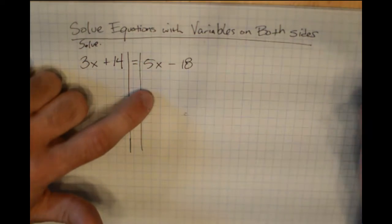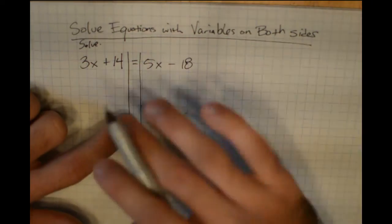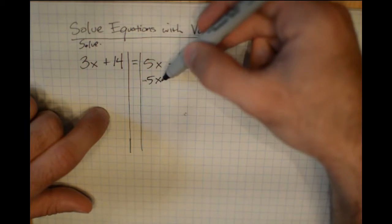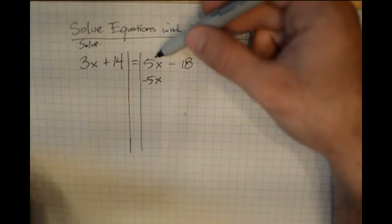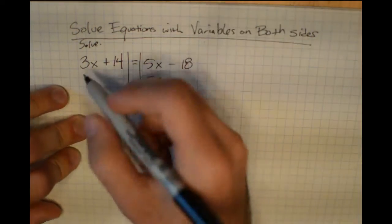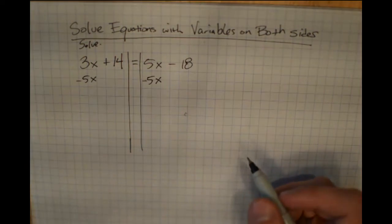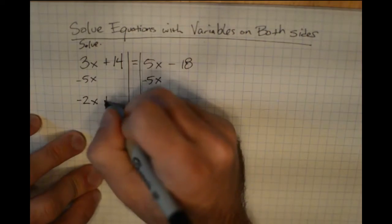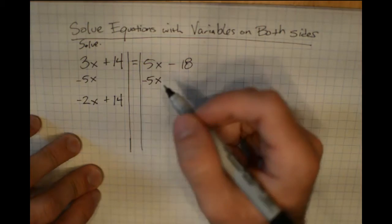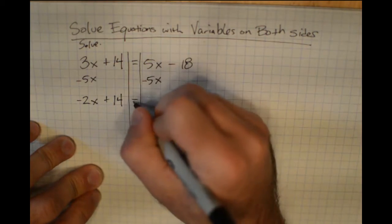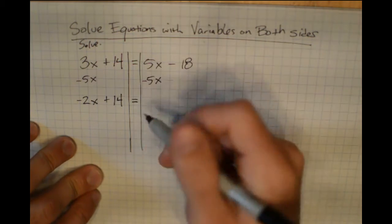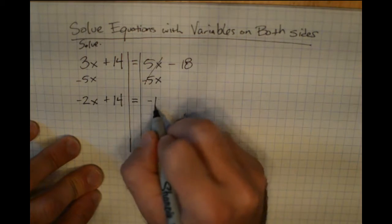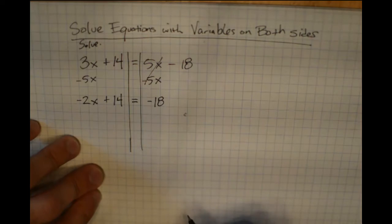I want to eliminate the 5x from the right — I don't want any variable terms on the right. Since it's positive 5x, I subtract 5x, giving me 0x. I've done that to the right side, so I also have to do it to the left: 3x minus 5x is negative 2x. The plus 14 and the equal sign get brought down, and 5x minus 5x is eliminated. The minus 18 stays as is.